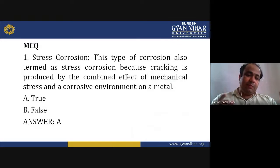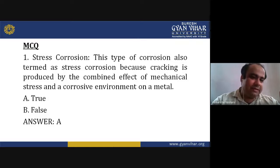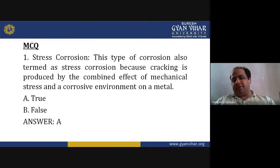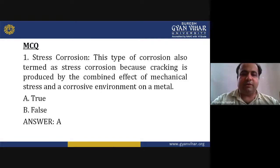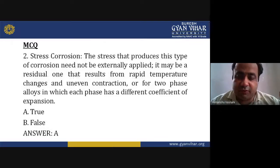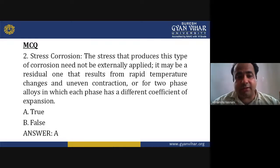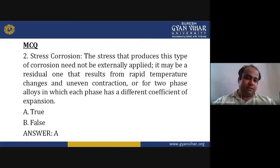MCQ review: Stress corrosion cracking is produced by the combined effect of mechanical stress and a corrosive environment on a metal — True (A). The stress that produces stress corrosion need not be externally applied; it may be a residual one that results from rapid temperature changes and uneven contraction, or for two-phase alloys in which each phase has a different coefficient of expansion — True (A).